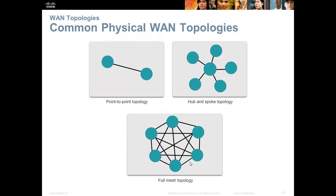Common physical WAN topologies include point-to-point, where two computers or routers communicate directly. A hub-and-spoke topology is common today, with a central switch and computers connecting into it. Full mesh topology — discussed in chapter one in terms of redundancy and fault tolerance — provides multiple paths to multiple destinations, typically implemented with multiple switches or routers in a stacked scenario.